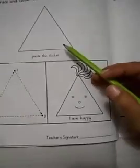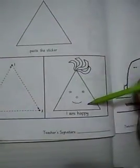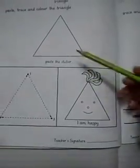In 1, you will paste. In the 2nd, you will trace. And in the 3rd, you will color. Okay? Triangles. 1, 2, 3.